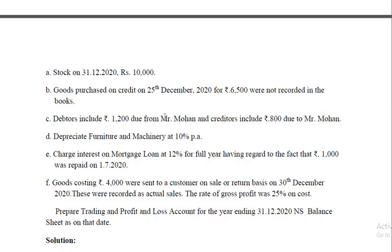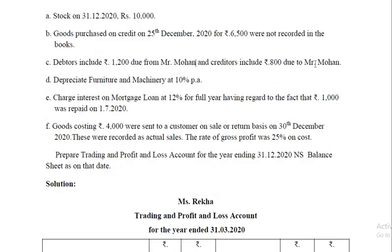Debtors include 1,200 due from Mohan; creditors include 800 due to Mohan. So a common transaction should be taken. 800 is receivable and 800 is payable, so 800 is the common transaction. From debtors, you have to deduct 800 on the asset side; from sundry creditors, 800 should also be deducted. So 800, which is the lesser amount, should be deducted from both debtors and creditors.